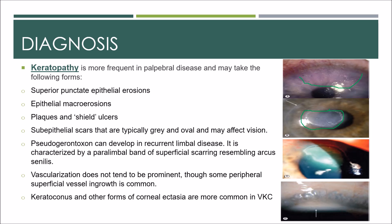Epithelial scars are typically gray and oval and may affect vision. Pseudo-gerontoxon can develop in recurrent limbal disease, characterized by a band of superficial scarring resembling arcus and adjacent to a previously inflamed segment of the limbus. Vascularization does not tend to be prominent, though some peripheral superficial vessel growth is common, especially superiorly.